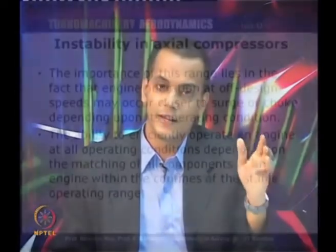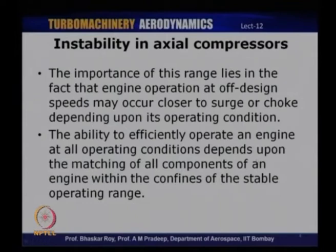The ability to efficiently operate such an engine at all operating conditions depends upon a successful match of all components within an engine and within the stable operating range. A turbojet engine typically has an air intake, then a fan or compressor, combustion chamber, turbine, and a nozzle. All these components need to operate synergistically in the given operating range as well as under off-design conditions. The compressor being the key component, it is necessary that the engine designer understands its performance over a range of operating conditions.